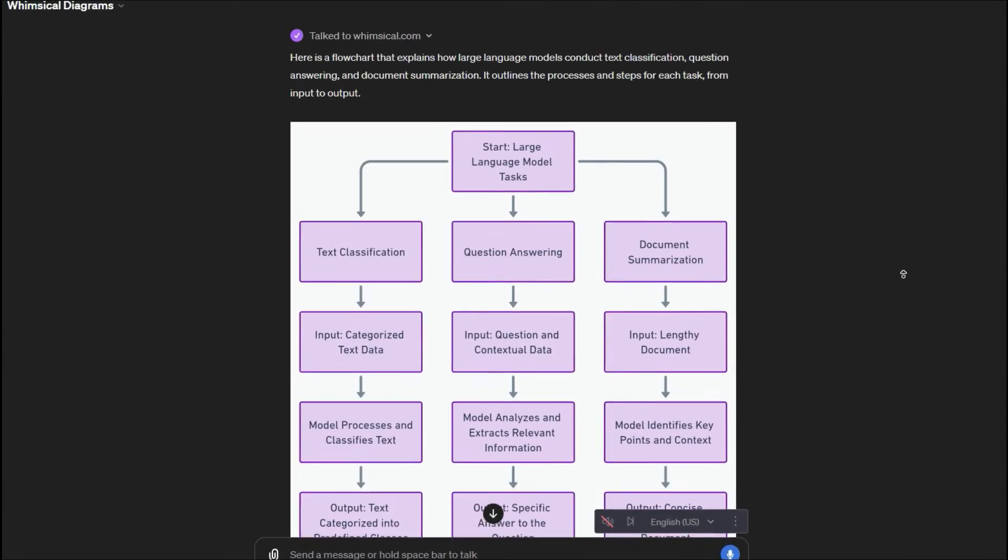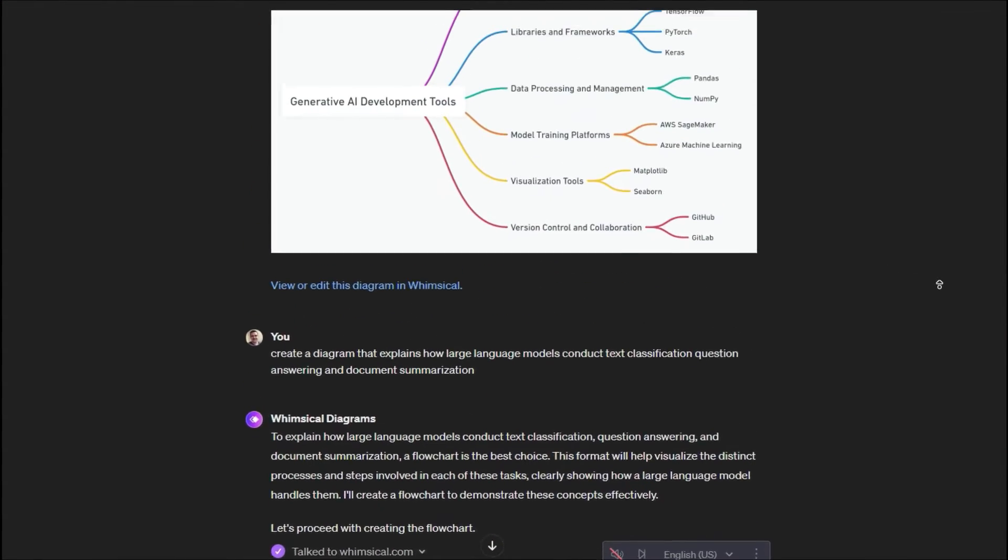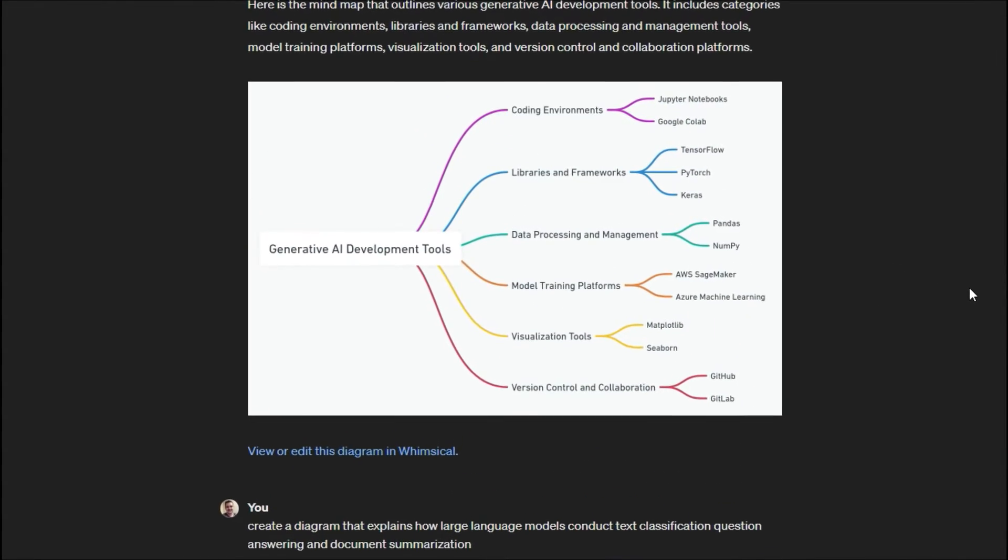In this video, I'm going to show you how to use this brand new ChatGPT for mind mapping. It's called Whimsical Diagrams.